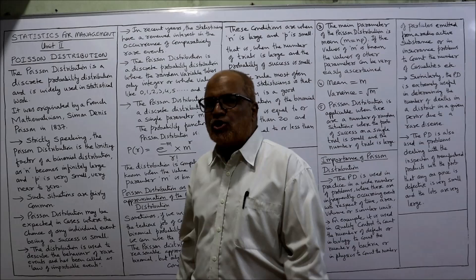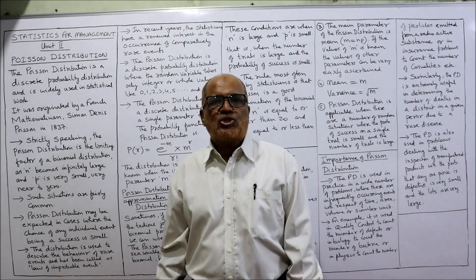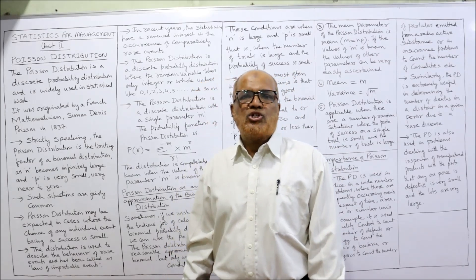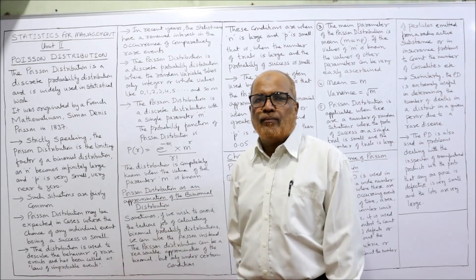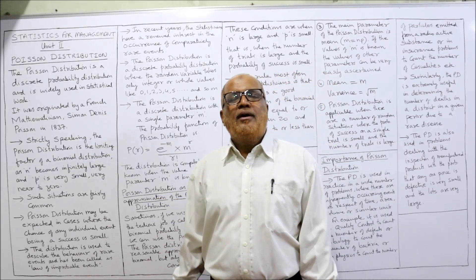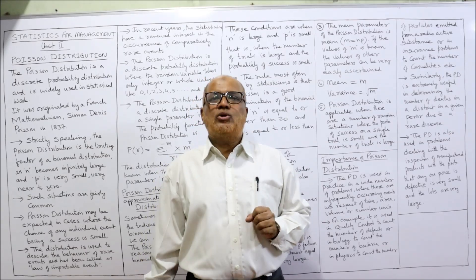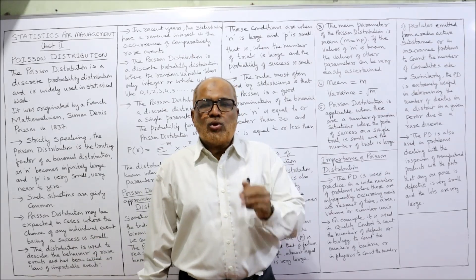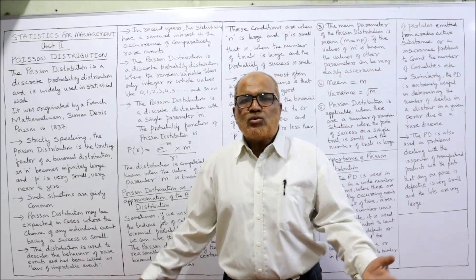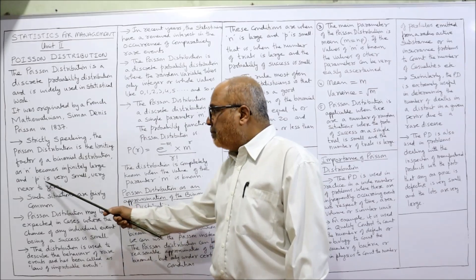Poisson distribution is also a discrete probability distribution which is widely used by statisticians in different circumstances, just like the binomial distribution. It was originated by a French mathematician named Simon Denis Poisson in 1837. Strictly speaking, Poisson distribution is a limiting factor of binomial distribution. That means under certain circumstances, the binomial distribution becomes difficult to apply, so in those circumstances we apply Poisson distribution.